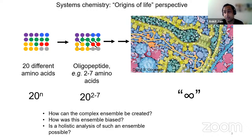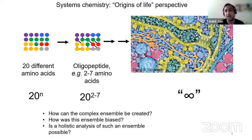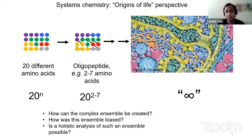If you are to look at the chemical origins of life, perhaps a way to start is this oligopeptide regime where there is a combination of two to seven amino acids. Still, there are a lot of combinations. That is a regime one could look at to see if there are biases or how these mixtures behave when reactions happen or when they are exposed to stimuli. So the questions that remain: can you actually create a complex ensemble, can you bias it, and after creating an ensemble which can be biased, can you actually analyze it completely to see how the mixtures are forming and what products are formed depending on what stimuli the system is exposed to?